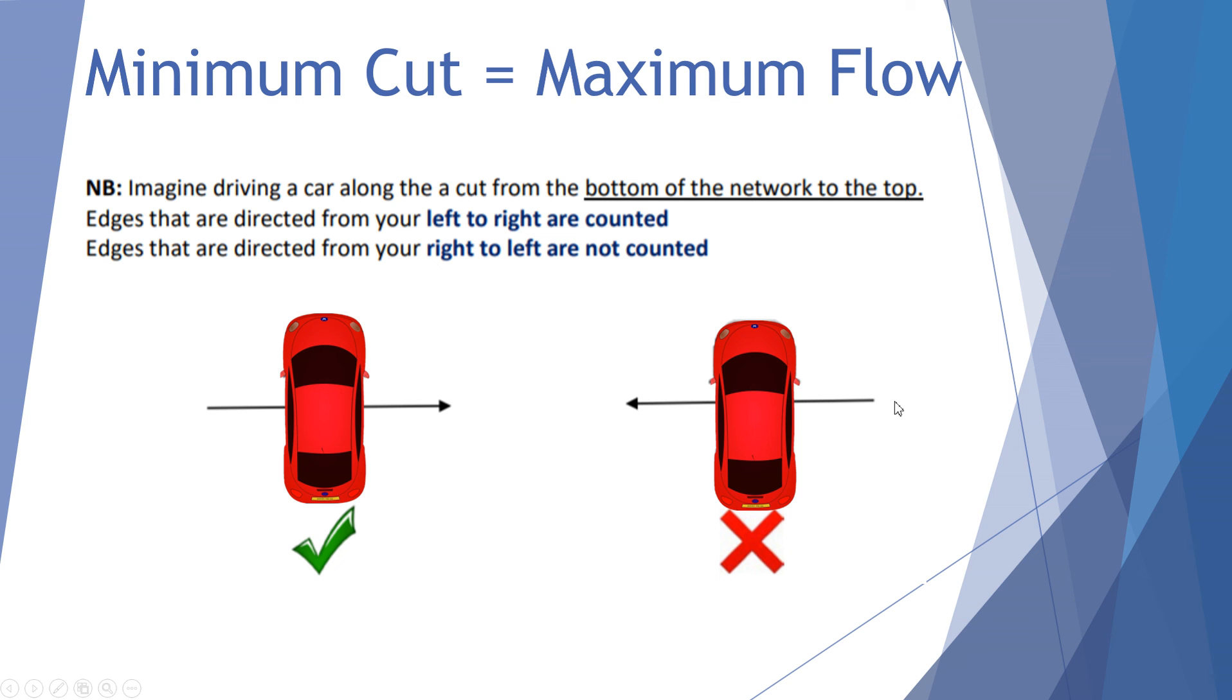However, if your line travels from the driver's side through to the passenger's side, from right to left, you don't count the capacity. Let's have a look at this example and see how it goes.